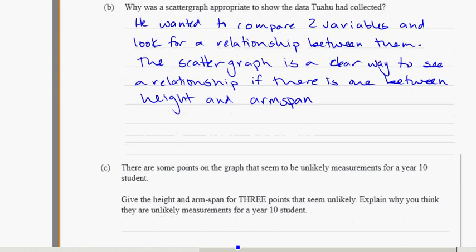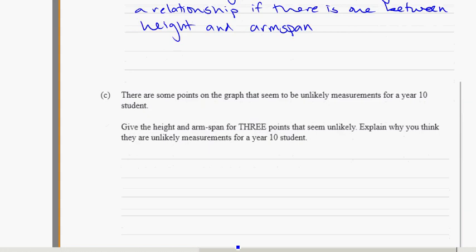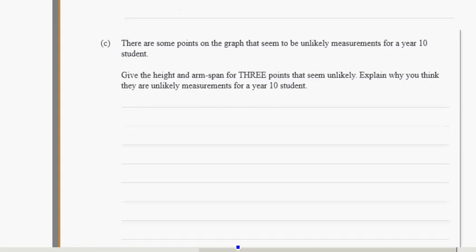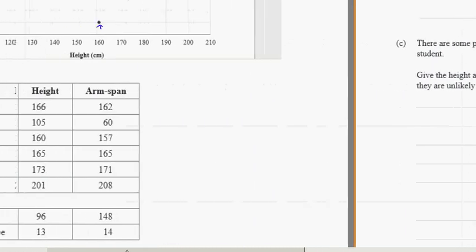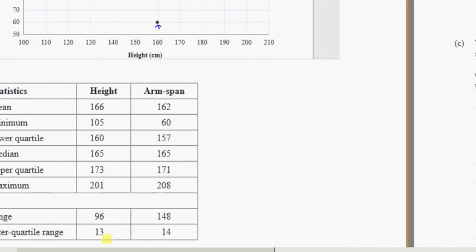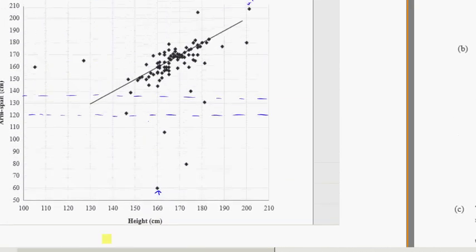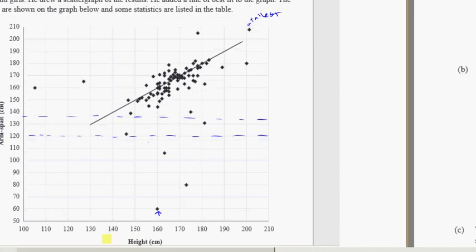There are some points on the graph that seem to be unlikely measurements for a year 10 student. Give height and arm span for three points. So we want three that seem unlikely. These are outliers. We're looking for three outliers. As you can see, there's quite a few on here, so you really have more than three to pick from.